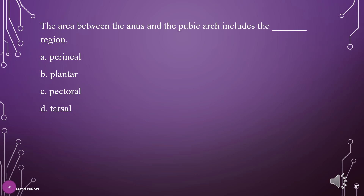The area between the anus and the pubic arch includes the what region? A. Perineal, B. Plantar, C. Pectoral, D. Tarsal. The answer is A: Perineal.